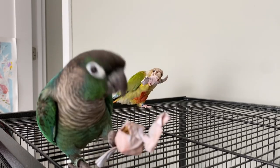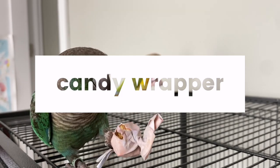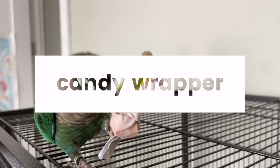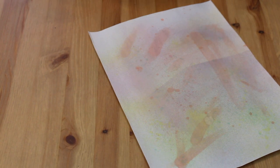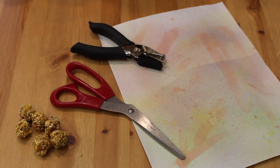The first toy is very easy and it's kind of a foot toy slash foraging toy. This is the candy wrapper toy. What you'll need is the colored paper that you just made, some scissors, a hole puncher, and some treats. I'll be using Nutri Berries.